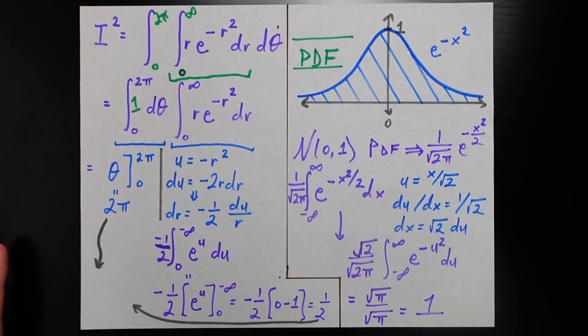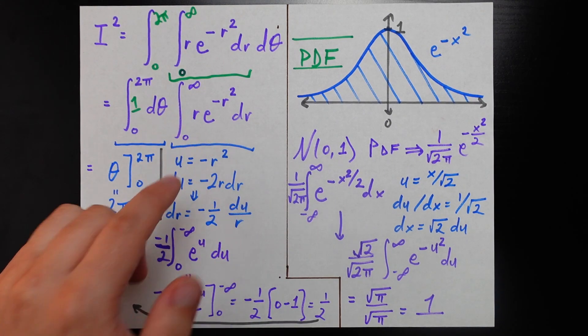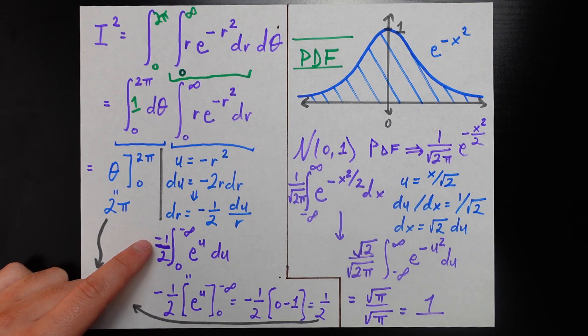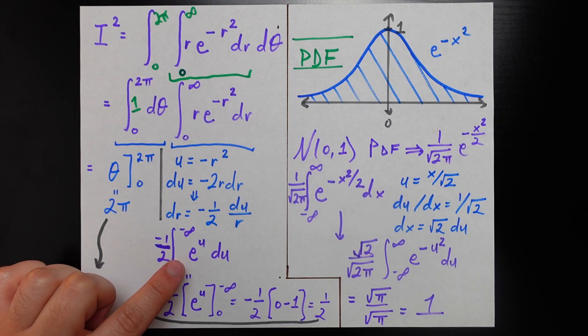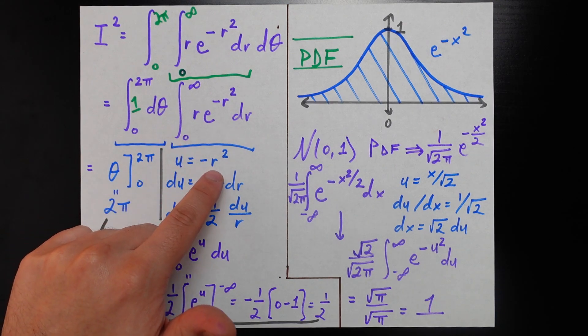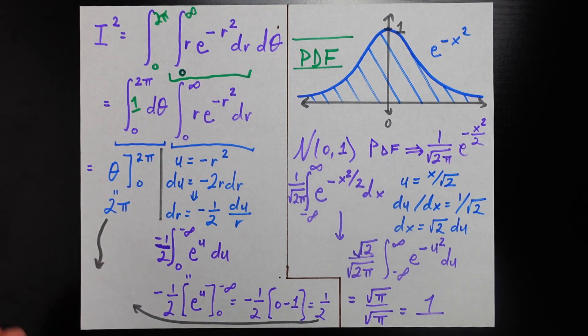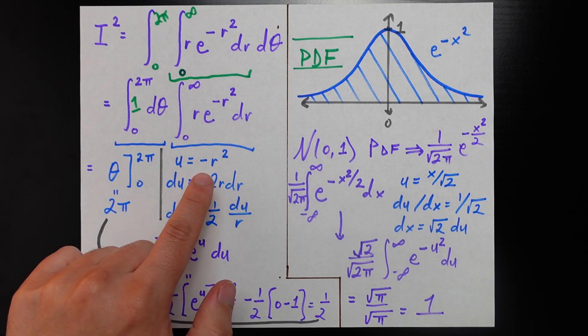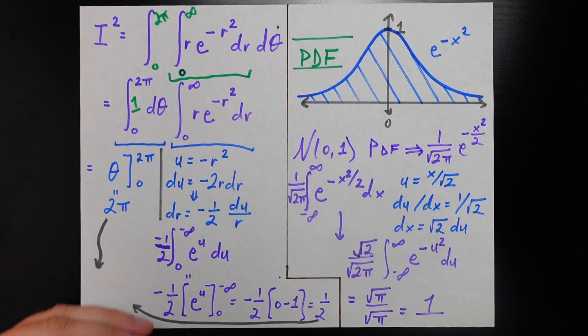That du divided by r cancels nicely with the r already hanging out here. This part of the integral simplifies to negative one-half the integral of e u du. What are the bounds? If you put in zero into this u function, that's zero. If you put infinity into this u function, that's negative infinity.